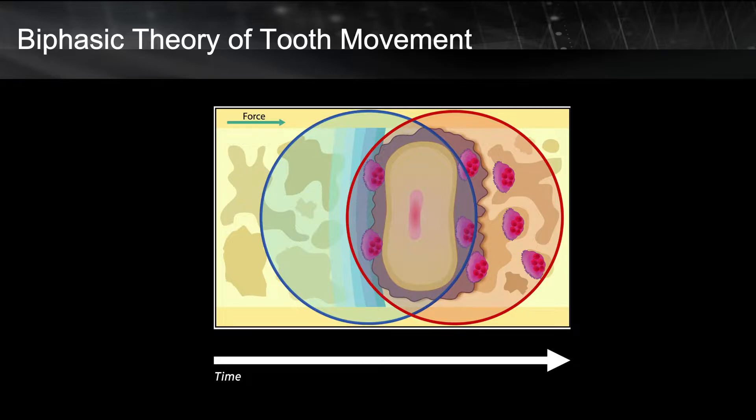Yes, I think you guessed right — it should be the osteoclasts, because they are the ones resorbing the bone in the direction of tooth movement. The osteoblast plays a significant role, but not in the rate of tooth movement, but in keeping the integrity of the structure while tooth movement occurs.